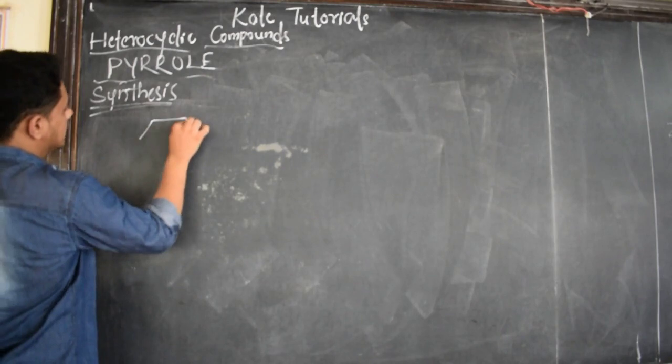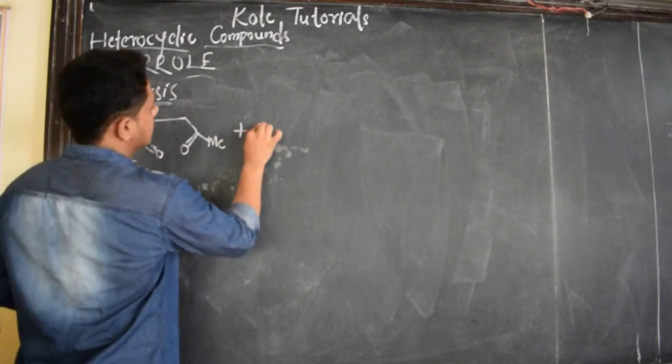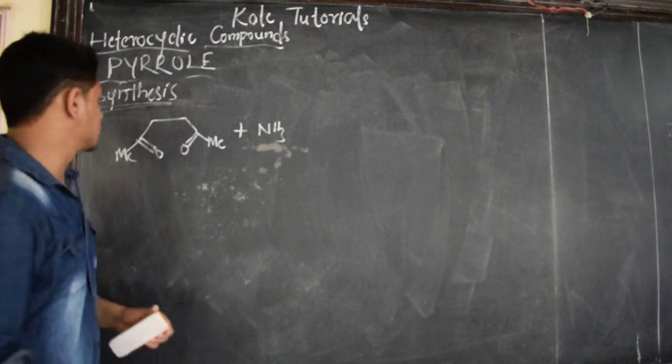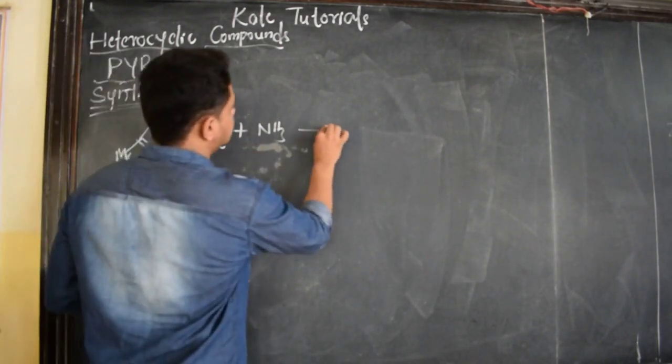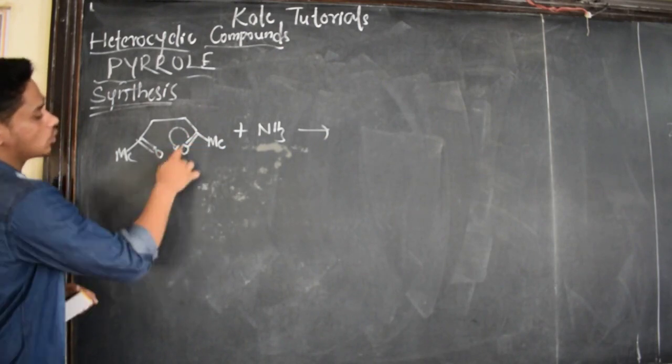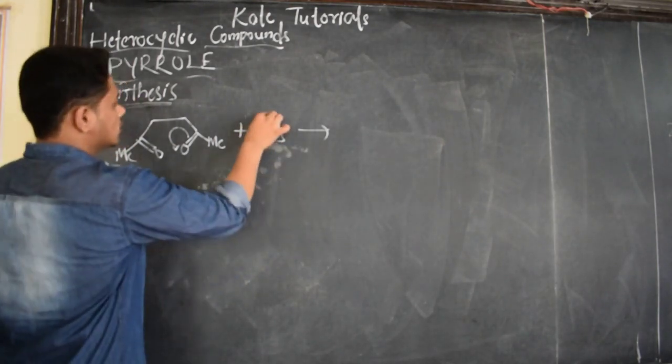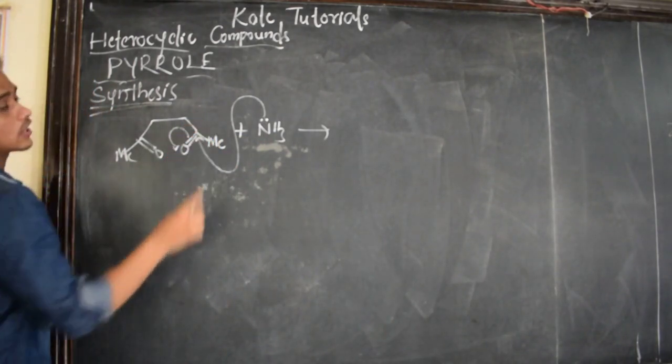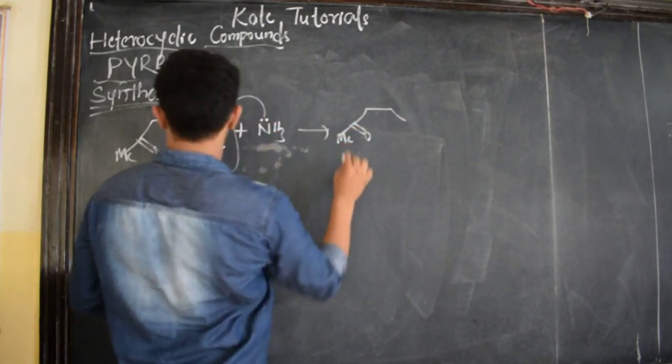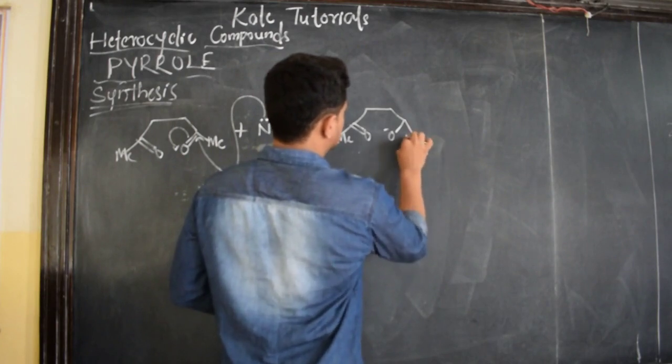So what we consider? First we consider ketone group, that is dicarbonyl compounds. This is dicarbonyl compounds and here I have ammonia. As I write, you do copy because I am going to rub the steps. This is also neutral and this is also neutral. So my next compound should be neutral. Here the oxygen is more electronegative, so it takes electron density towards itself. And this is base because it has got two lone pairs of electrons. So it is electron rich, so it is going to attack this position where it is electron deficient.